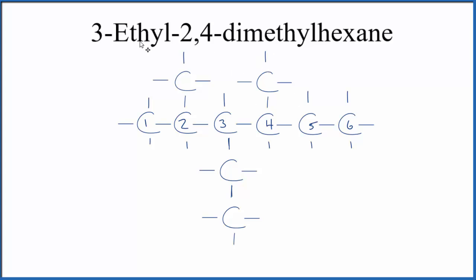Now the third carbon, one, two, three. We have this ethyl group, which is CH2CH3. So that's it. This is Dr. B with the structural formula for 3-ethyl-2,4-dimethylhexane. Thanks for watching.